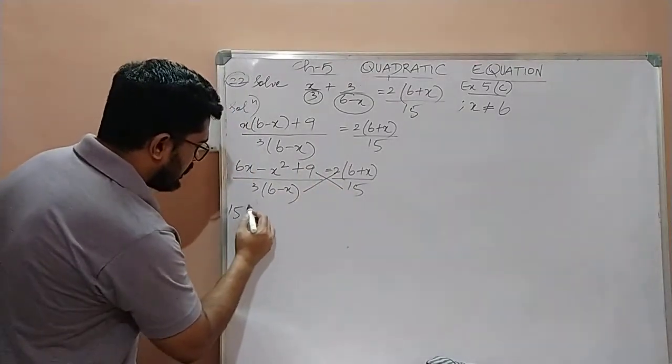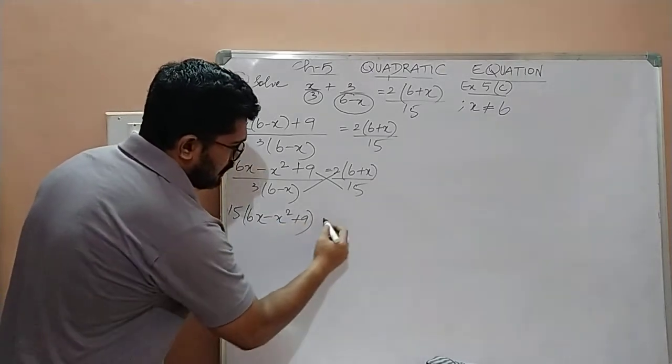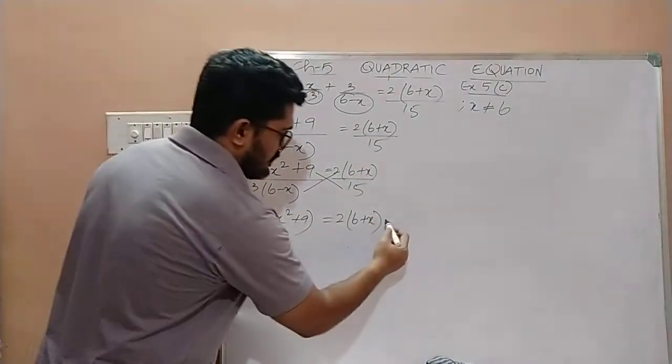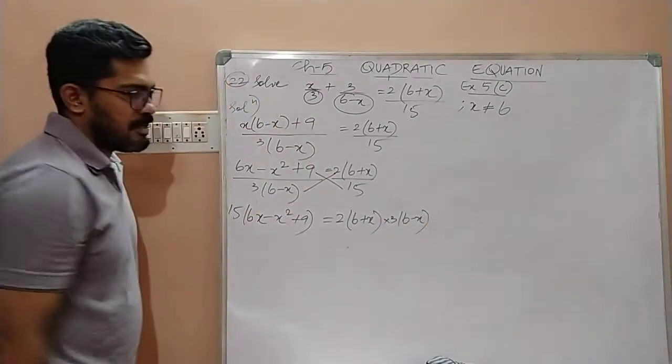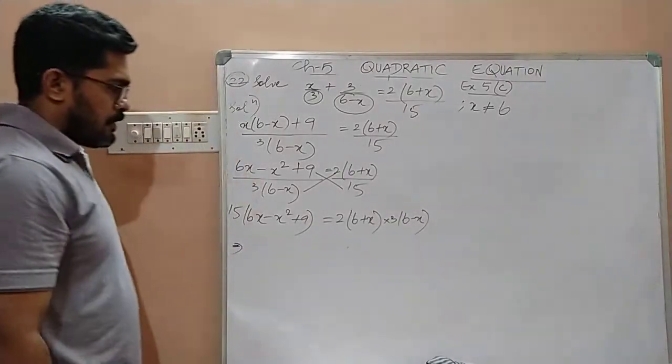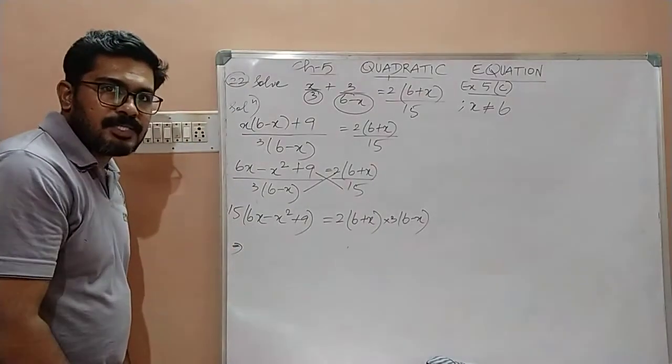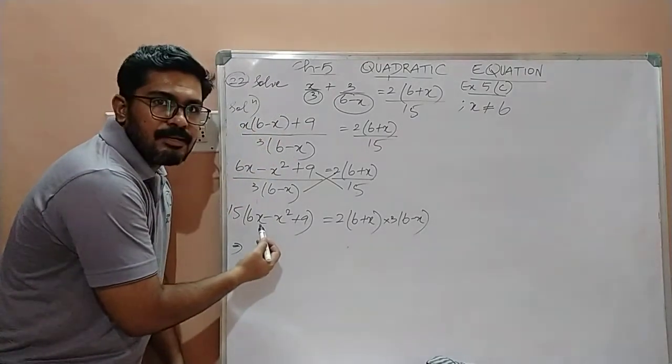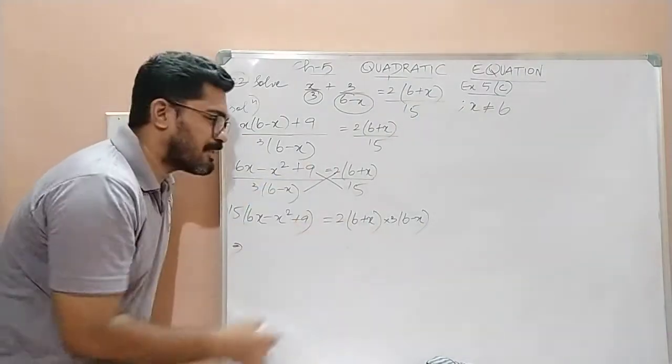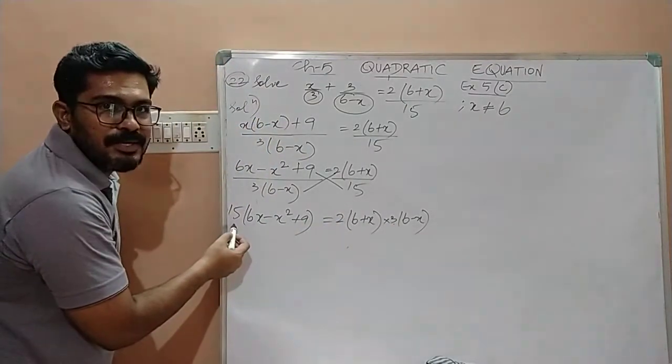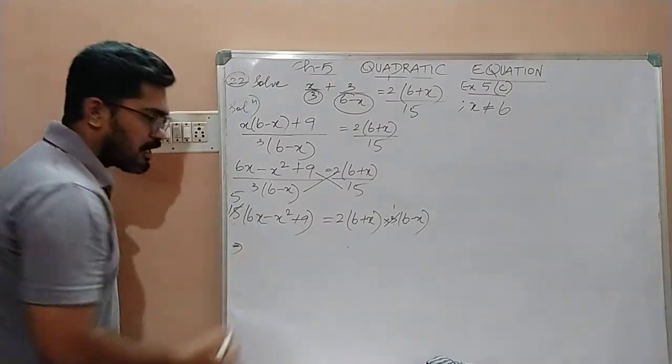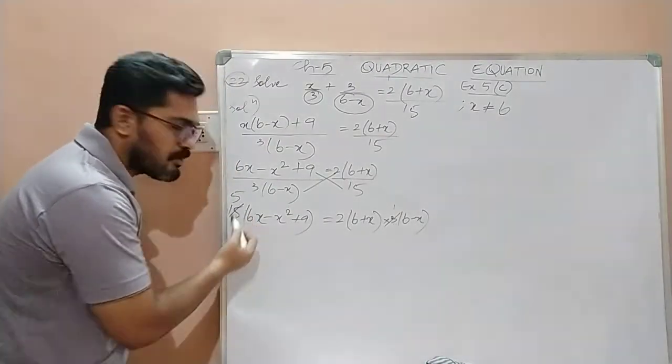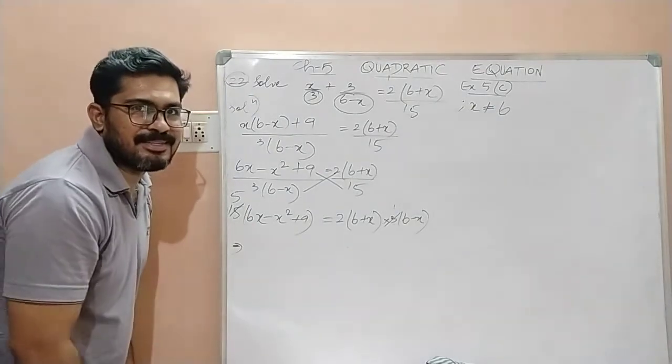So let us cross multiply both sides. So here 15 will get multiplied with 6x minus x square plus 9 which is equal to here we have 2 into 6 plus x and here we have 3 into 6 minus x. Now, children, what we can do? We can just open this bracket on the left hand side. Children, before even I open this bracket, there is one simple way of simplifying it. What is that simple way? Children, we have 3 over here and we have 15 over here. Can I just cancel 3 and 15 directly? So that we don't have to multiply each and every term inside this bracket with 15. You have to just multiply it with a smaller number than 15 which is 5. Easy? Basic math, children.